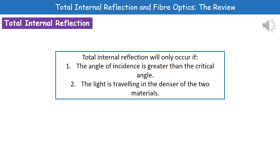We need to remember the two conditions that must happen for Total Internal Reflection to occur. First, we've got to have an angle of incidence greater than the critical angle. Second, the light must be travelling in the denser of the two materials. Total Internal Reflection wouldn't happen if the light was travelling through air towards glass — it will only happen if it's travelling in the glass towards the air.